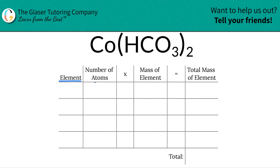The first thing I need to do is write down the particular elements in the compound. So we have cobalt, we have hydrogen, we have carbon, and we have oxygen.